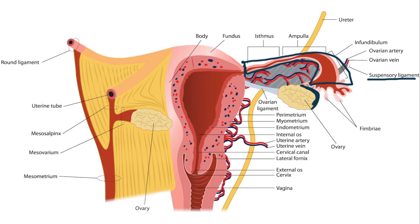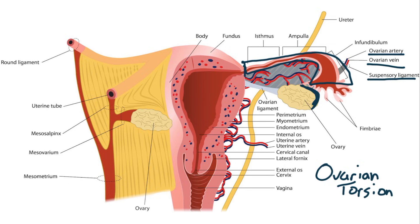Notice that traveling through the suspensory ligament is the ovarian artery and the ovarian vein. This brings us to a very important clinical tie-in. There's a condition called ovarian torsion, in which the ovary twists around the ligament, thereby squeezing the contents within the ligament — the ovarian artery and the ovarian vein. Therefore, ovarian torsion will decrease blood flow to the ovary and will cause ovarian ischemia.